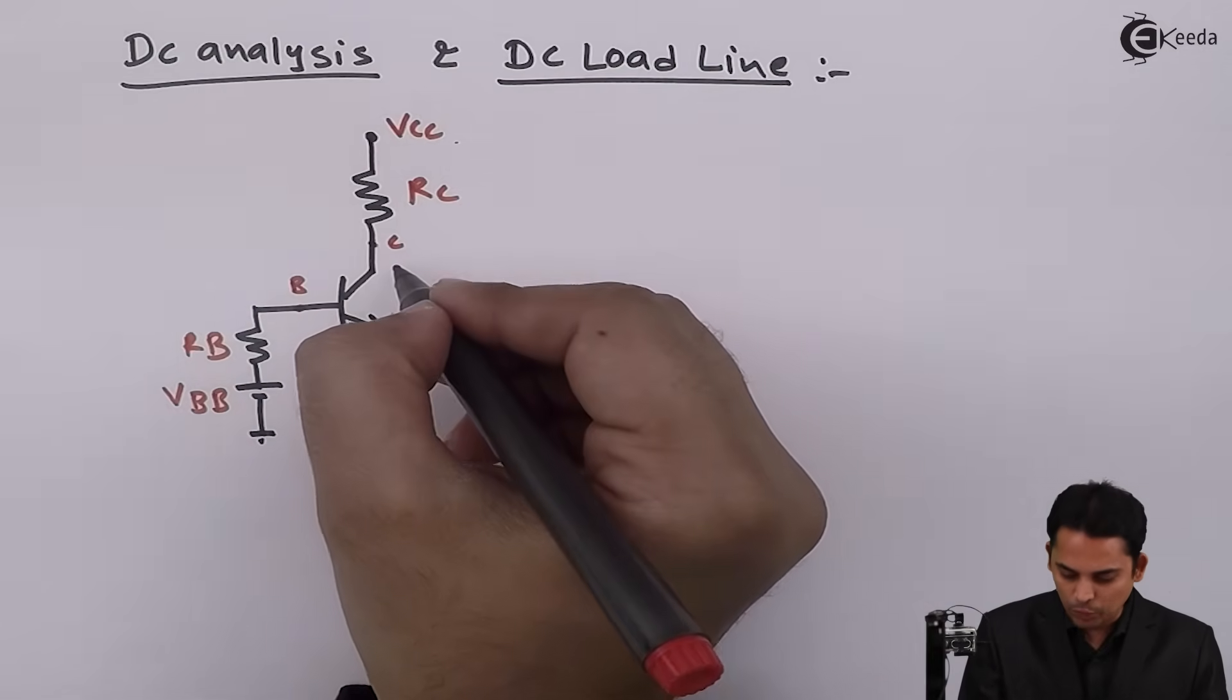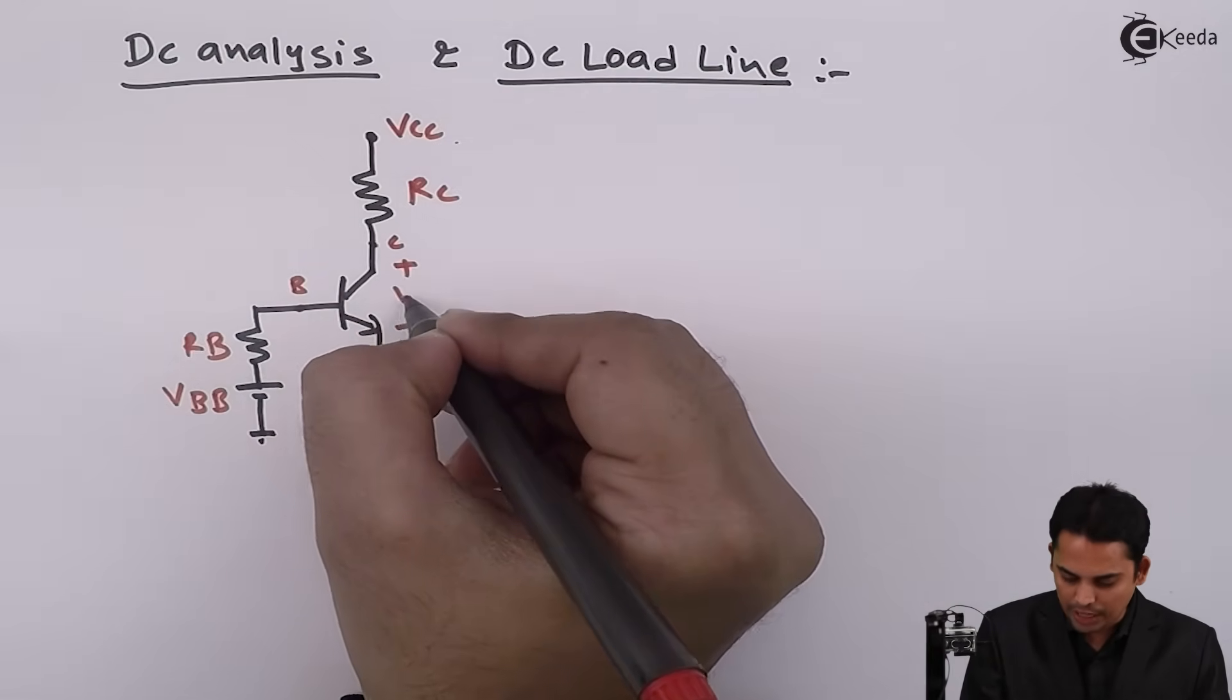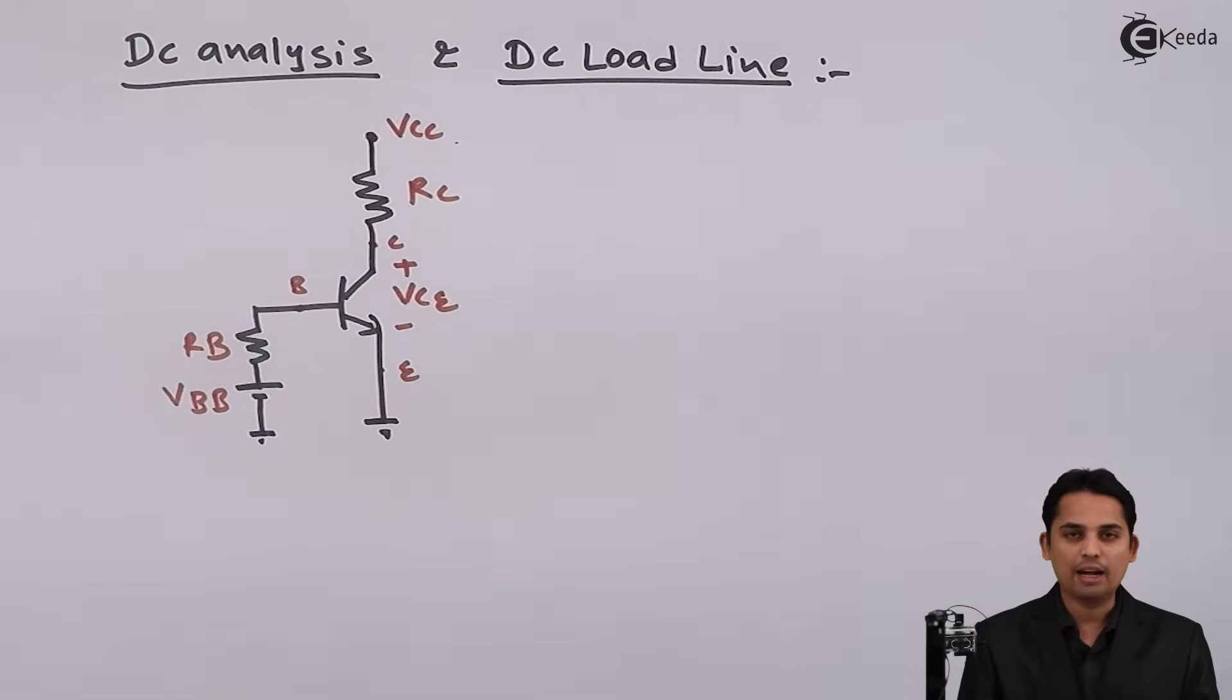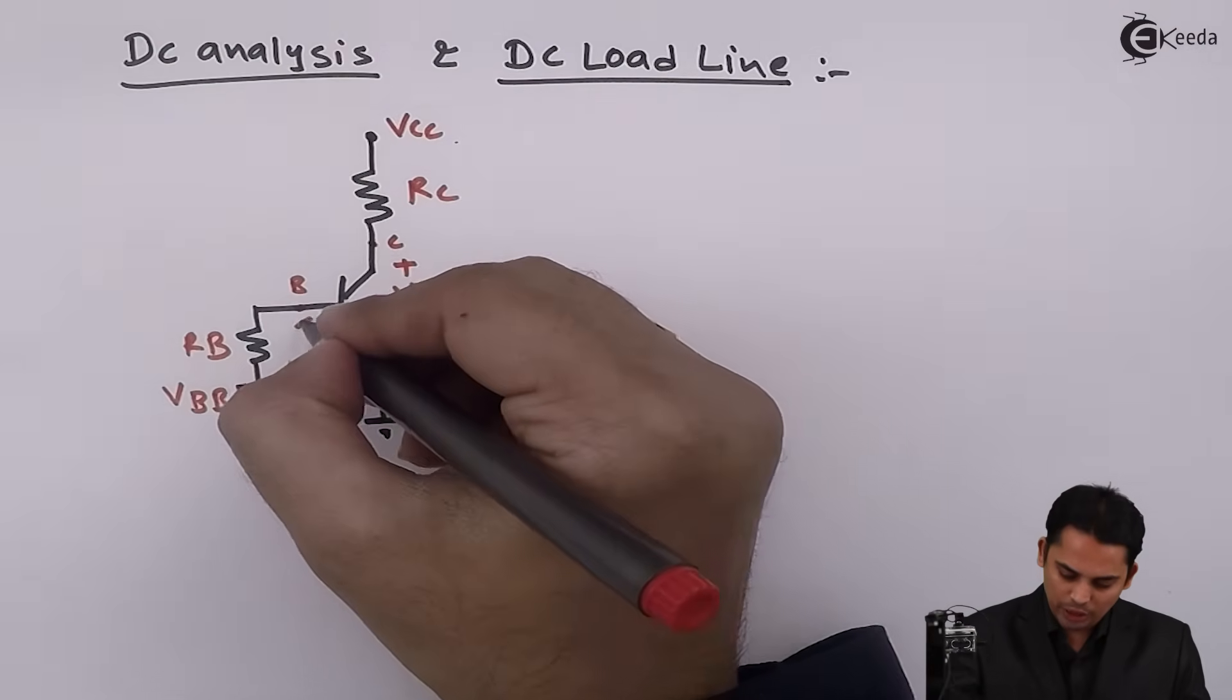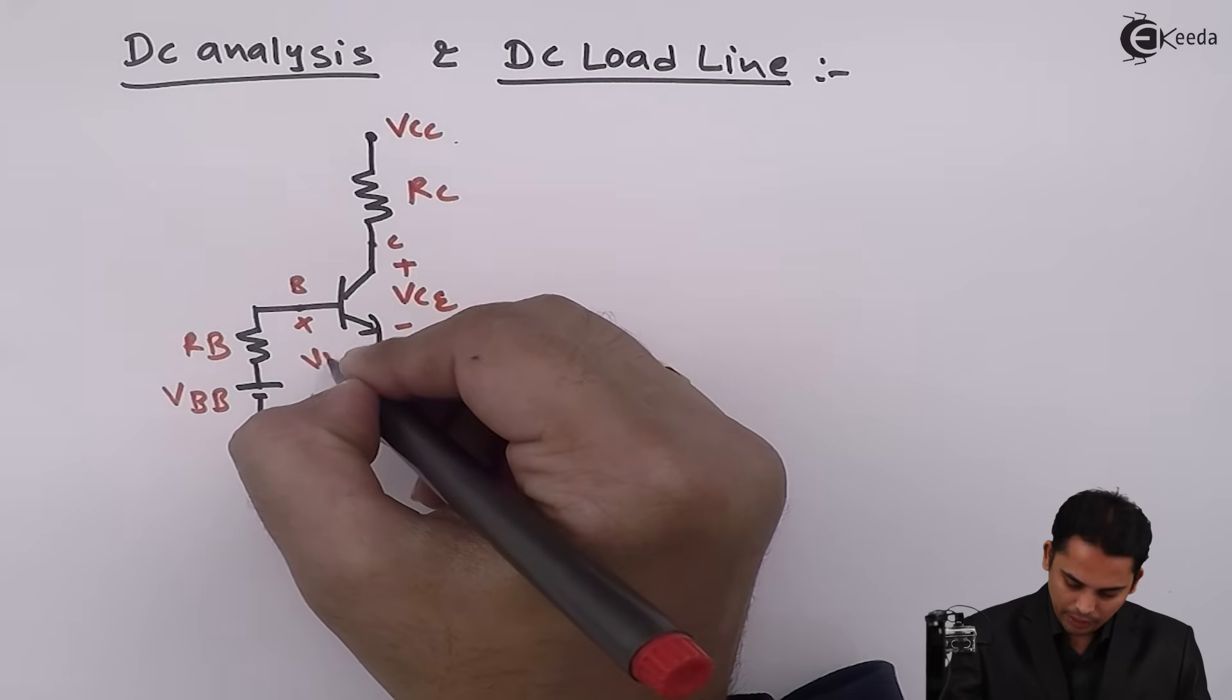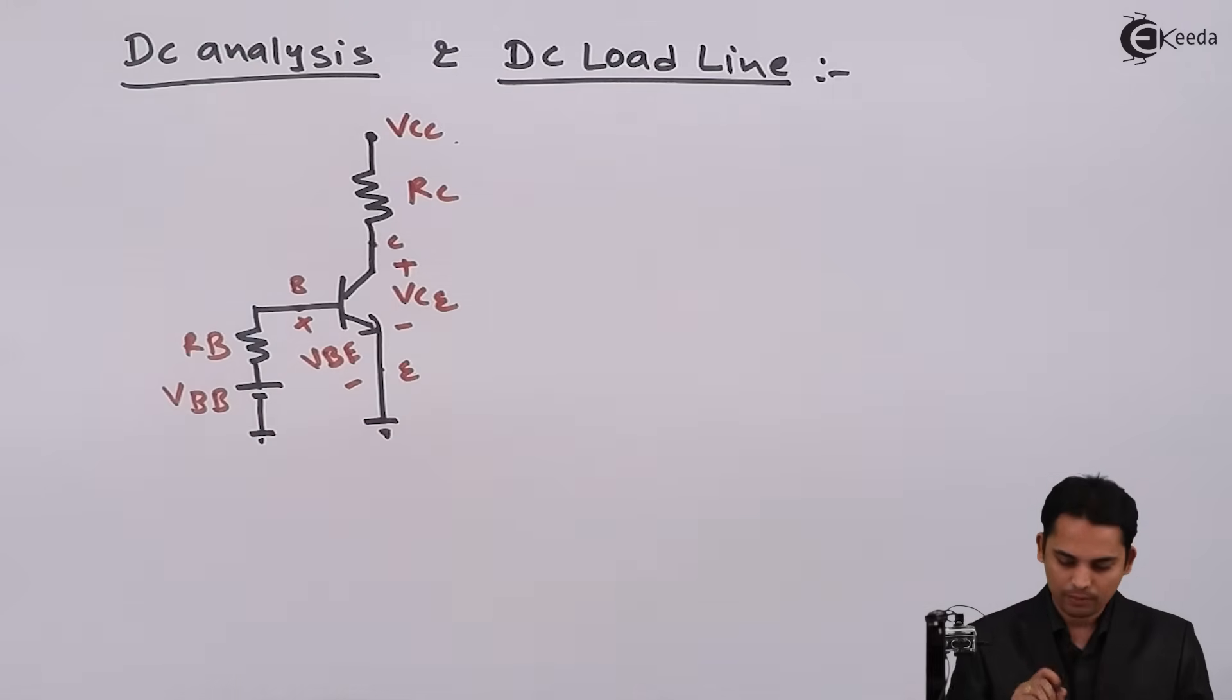The voltage between collector to emitter is called VCE and voltage between base to emitter is called VBE. In order to get DC loadline, we need to apply KVL to the output. Before that, what is exactly DC loadline? DC loadline is a graph which has all possible values of IC and VCE.